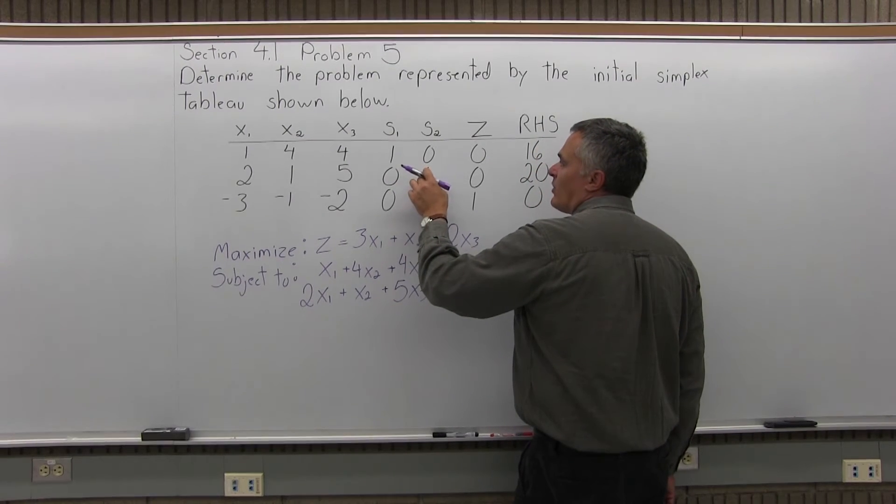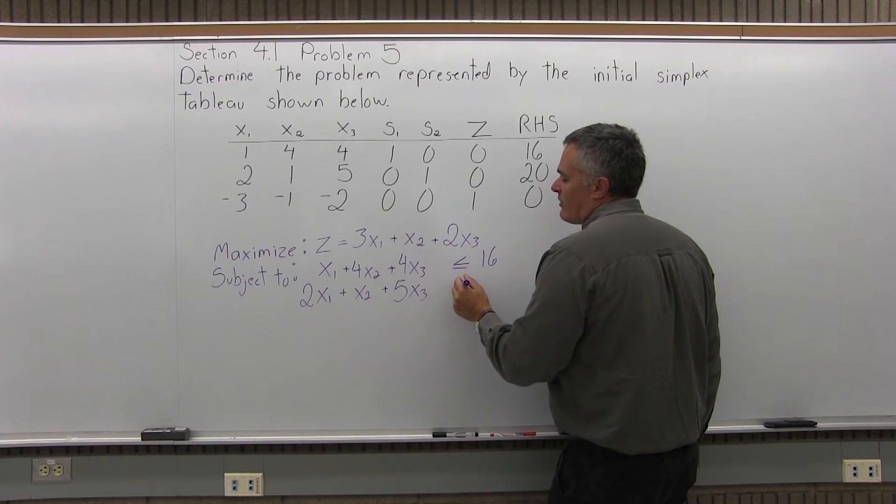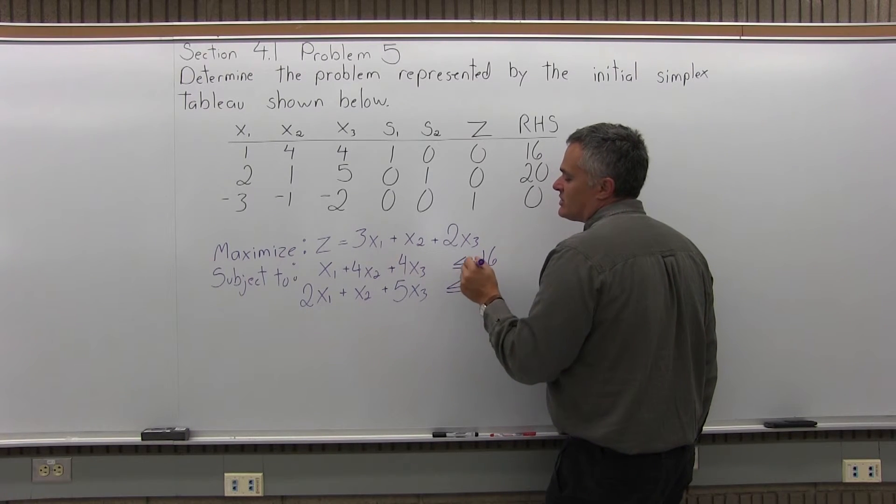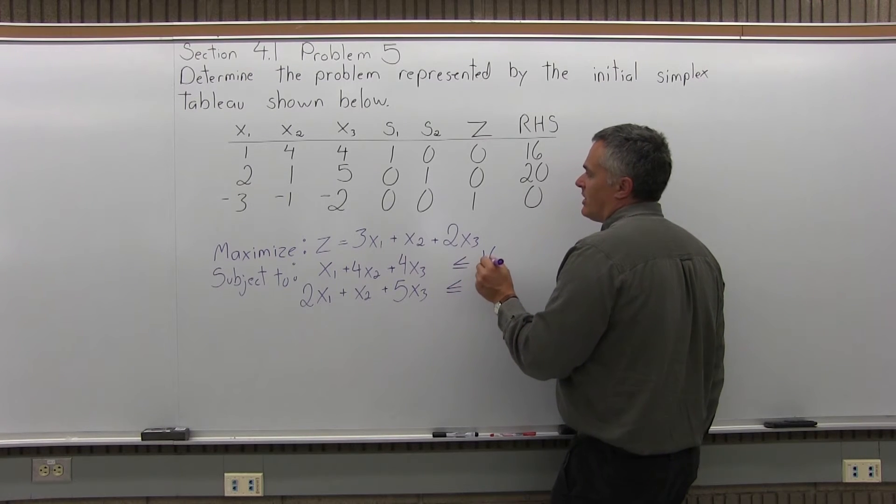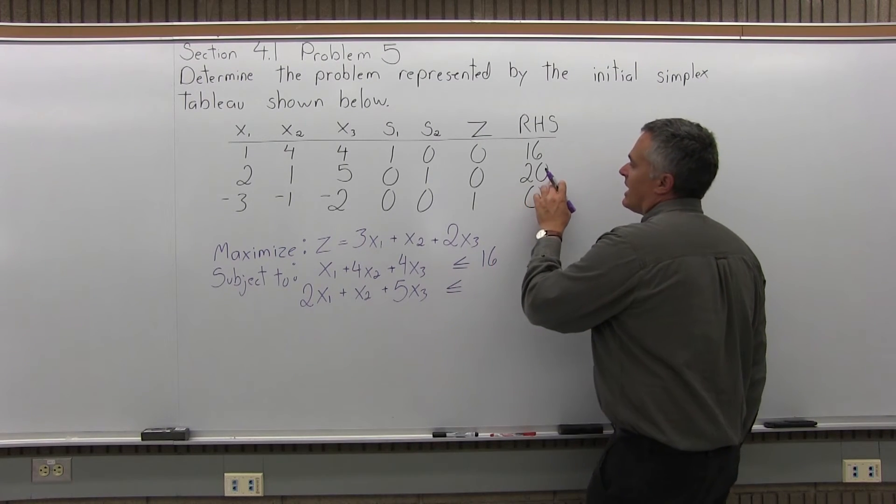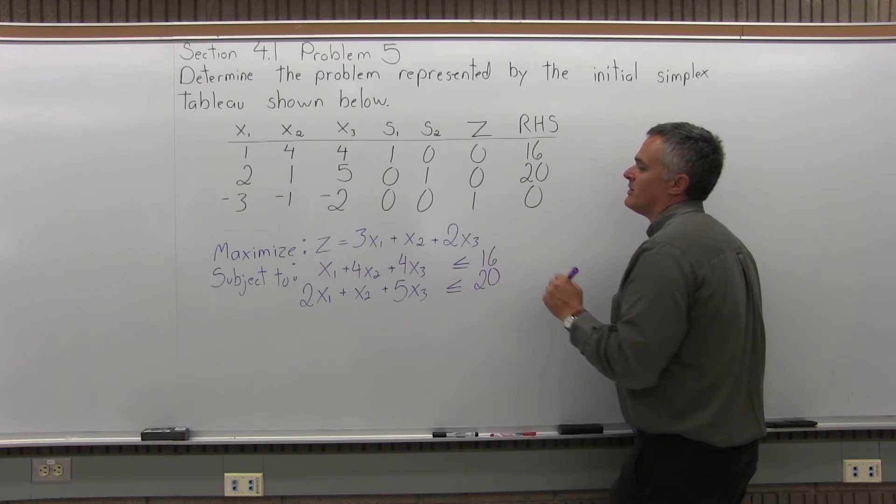And again, I do have a 1 in the S2 column of that middle row. So I don't have to represent the S when I write the middle equation as not an equation, but a less than or equal to, a linear inequality. And the right-hand side value will be 20, because that's what's in the RHS column of the middle row.